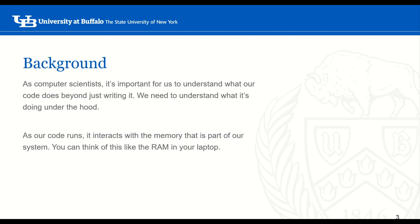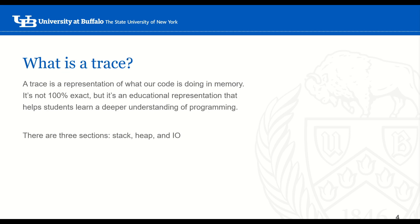Now, for us to do tracing, we have to understand the background. As computer scientists, it's not enough for us to just be able to write code — we also need to understand what our code is doing under the hood. As our code runs, it interacts with the memory that's part of our system. You can think of this like the RAM that's in your laptop. We can't look into our RAM to see what's going on when our code is running, but we can use a trace, which is a representation of what our code is doing in memory.